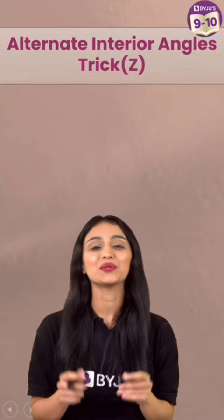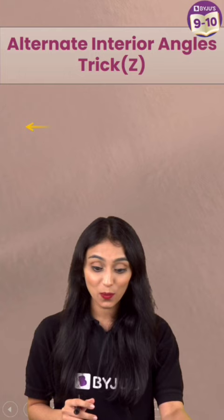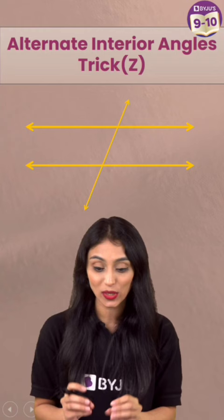Hey students, today I will tell you an interesting trick to remember the different types of angles. So whenever we have lines parallel and they are intersected by a transversal, alternate interior angles—isme identify karne ka tariqa hai, z aap dekh sakte hai.